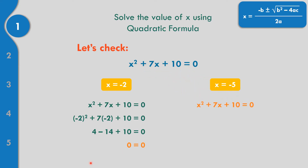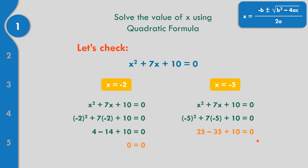For the second value, X equals negative 5: negative 5 squared plus 7 times negative 5 plus 10 equals 0. Negative 5 times negative 5 is positive 25. 7 times negative 5 is negative 35, plus 10 equals 0. 25 minus 35 is negative 10, plus 10 equals 0. So the solutions for X squared plus 7X plus 10 equals 0 are negative 2 and negative 5.